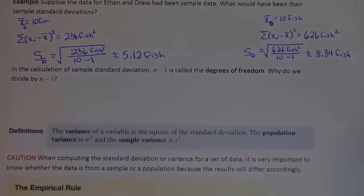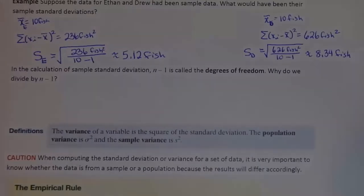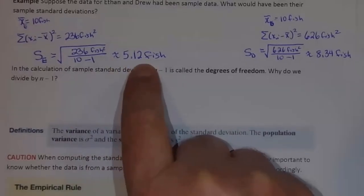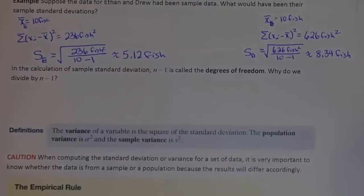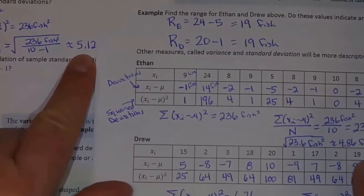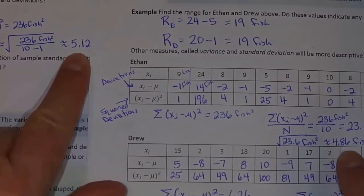Well, what's the point? We need to pay attention to whether we have sample data or population data. We need to know if we're calculating a parameter or a statistic, and for the first time now it really matters. Because if Ethan's data is a population and I calculate his standard deviation thinking it's a sample, I don't get the same answer. If Ethan's data is a sample, his standard deviation is 5.12. If Ethan's data is a population, then his standard deviation is 4.86.